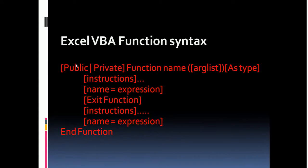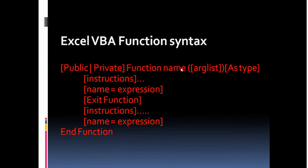The access specifier is optional — your function may or may not contain it. It is followed by the mandatory keyword 'function', and then the function name. This name should not be a reserved keyword of Excel VBA. The function may or may not contain arguments, depending on how you are using it.